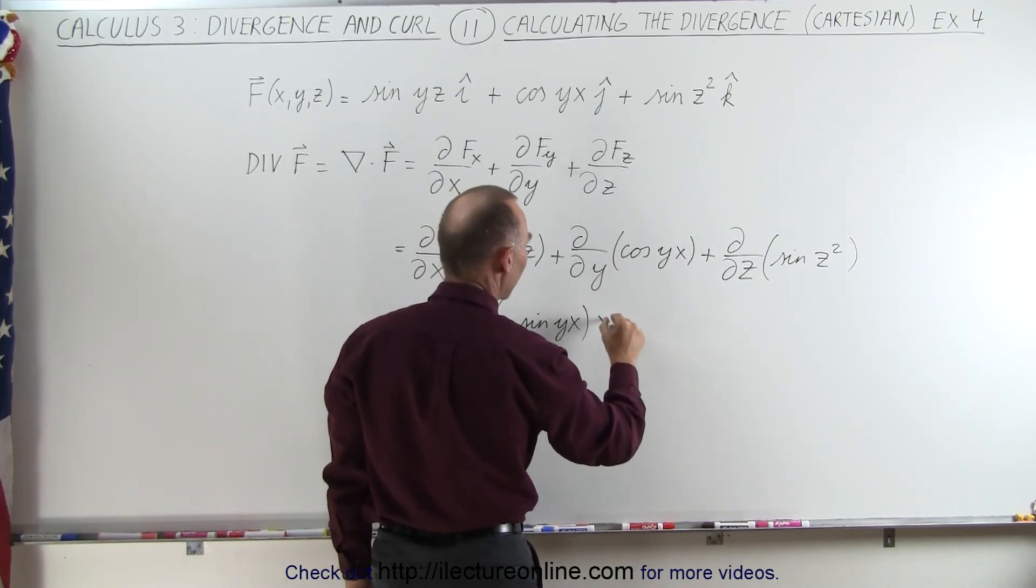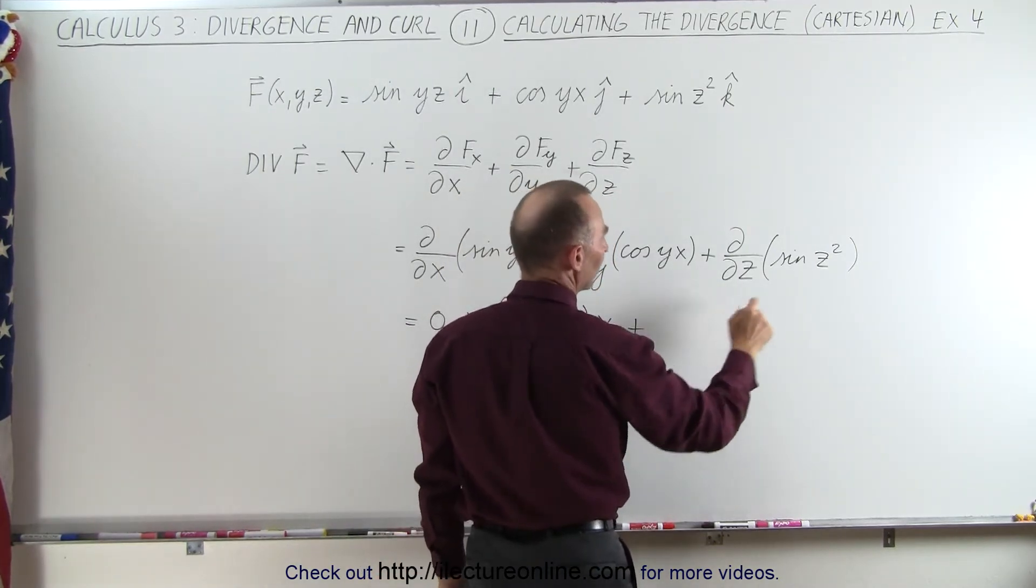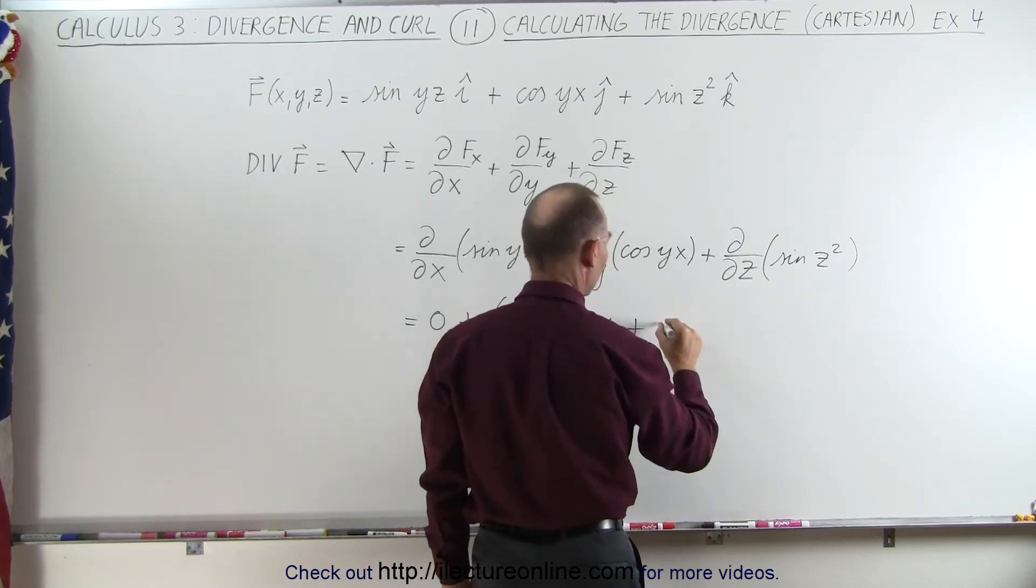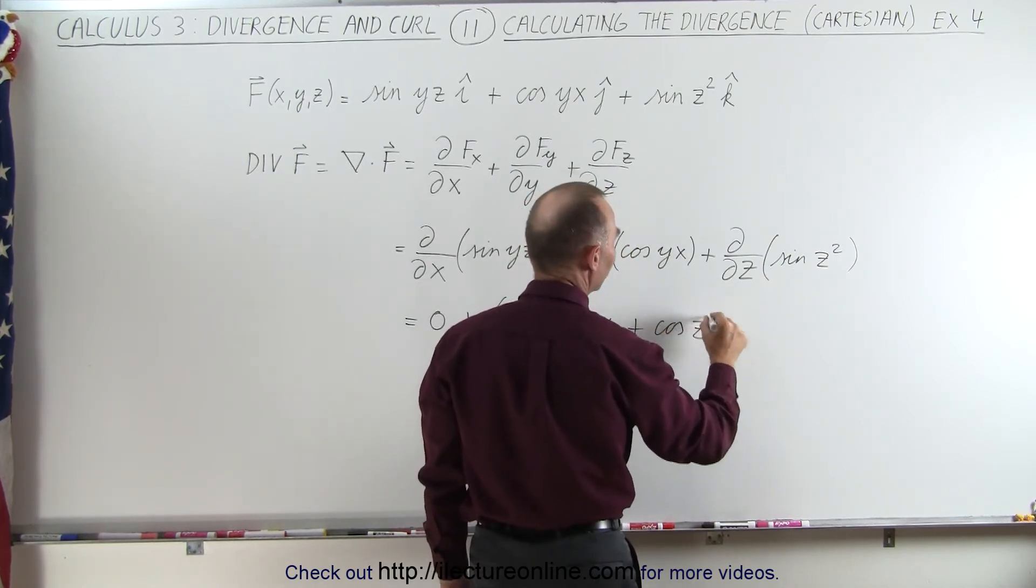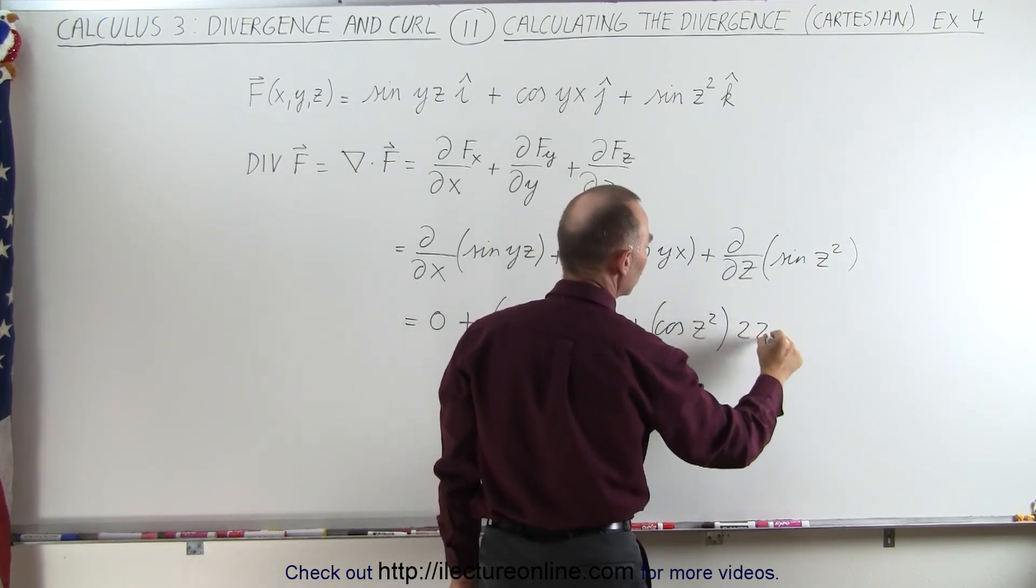And then here we have sine of z squared. The derivative of sine is cosine, so that becomes cosine of z squared times the derivative of the angle, which is 2z.